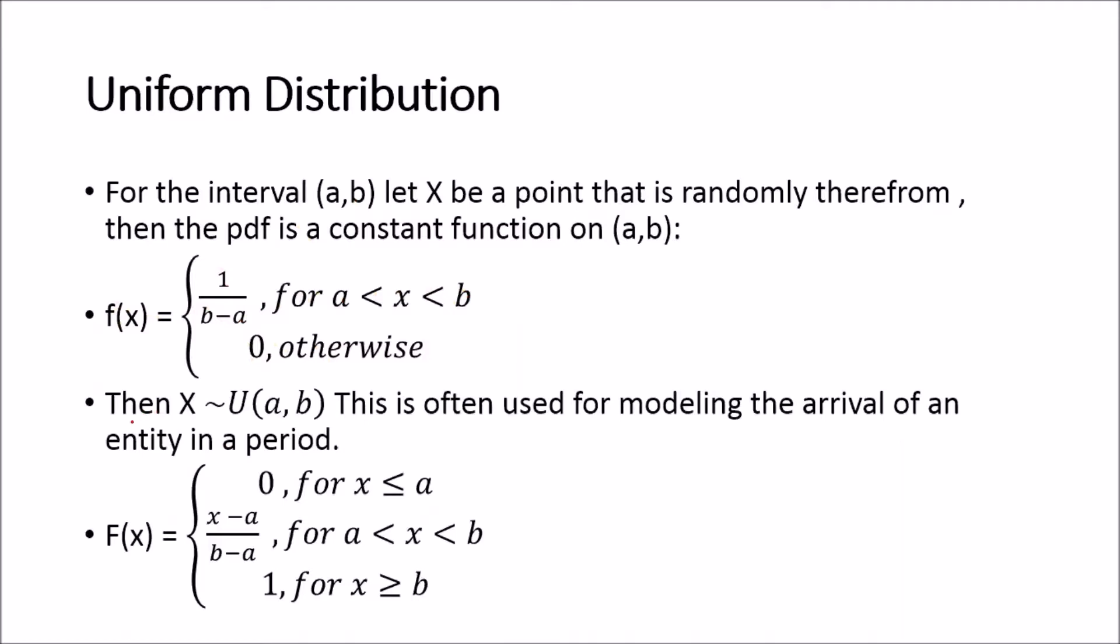So if this is the case, then we know that X will be distributed uniformly from a to b. We often use this to model the arrival of an entity within a period of time.